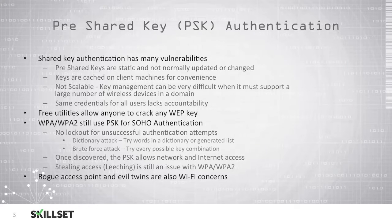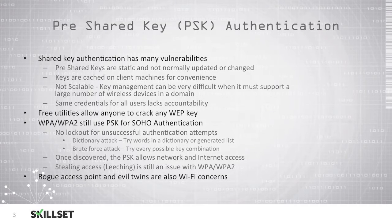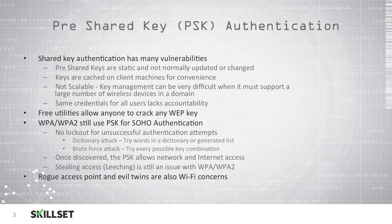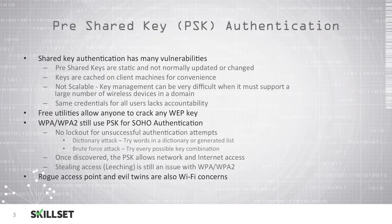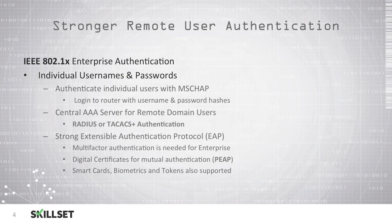You also have to be concerned with rogue access points — an individual in your company brings in their own wireless access point and plugs it in without your knowledge, creating additional vulnerabilities. Evil twin attacks are also a problem, where an attacker creates a wireless access point with a name that appears to be friendly, such as your company name, tricking individuals into connecting to it so the attacker can read all traffic to and from those employees.